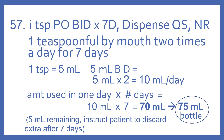One teaspoonful equals five milliliters. So that will be five milliliters BID, which is twice a day. Five mL times two equals 10 milliliters per day. So the patient will be receiving a total of 10 milliliters per day, and that's going to be for seven days. So the amount used in one day times the number of days: 10 milliliters times seven equals 70 milliliters.